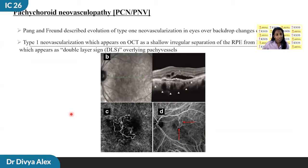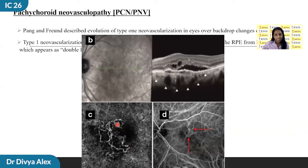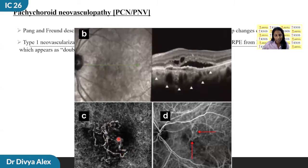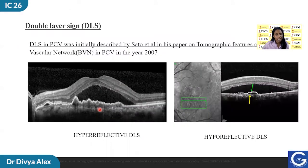Pachychoroid neovascularopathy, also known as PCN or PNV, was described by Pang and Freund. This is type 1 neovascularization appearing on a pachychoroid spectrum. It appears on OCT as a double layer sign. With the advent of OCTA, the diagnosis of PCN is more straightforward. OCTA reveals a tangled filamentous branching vascular network with a flow signal corresponding to the double layer sign. The sensitivity of OCTA in detecting CNV is definitely more than that of ICG. The double layer sign, first described by Sato et al., is defined as a separation of the RPE from the underlying Bruch's membrane with hyperreflective material in between, considered to be encroaching type 1 neovascularization.